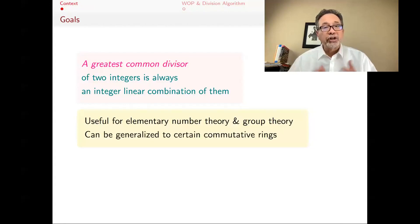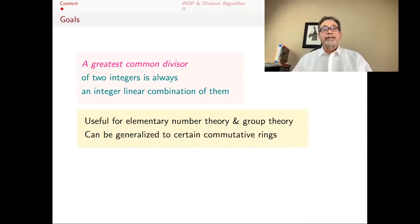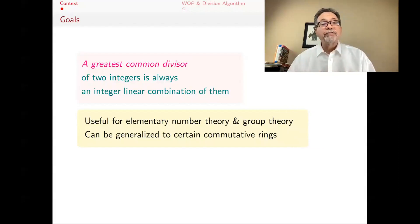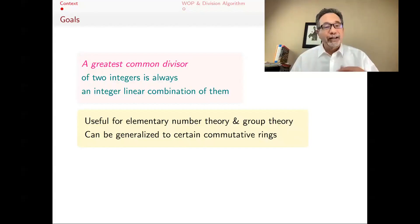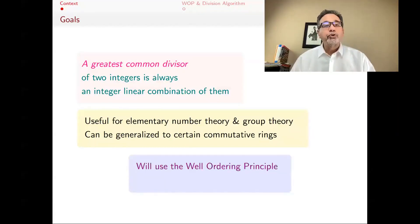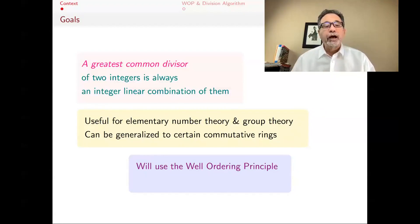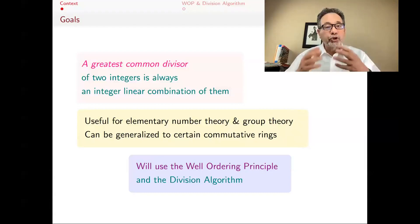This is also generalizable to commutative rings in general. In commutative rings, it's not always true that greatest common divisors exist, but for some rings they will, and for some of them it will also be true that the greatest common divisor is a linear combination of the two elements. Those rings will be special. To do this, we will use two things, both subjects of a previous video: the well-ordering principle and the division algorithm.